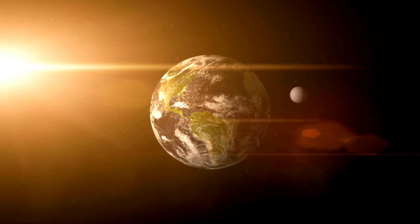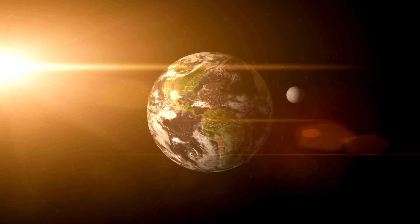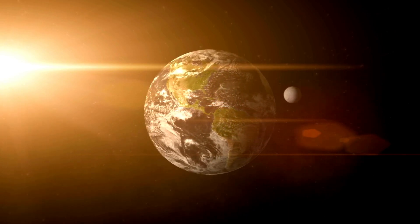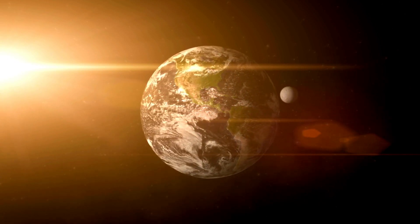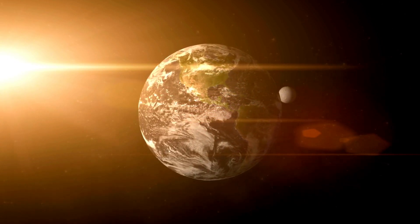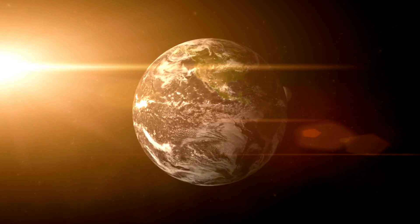Earth rotates on its axis every 23.9 hours, defining day and night for surface dwellers. This axis of rotation is tilted 23.4 degrees away from the plane of Earth's orbit around the Sun, giving us seasons.